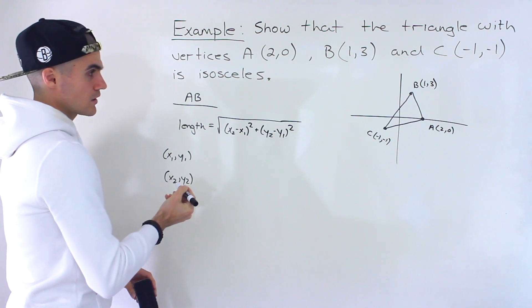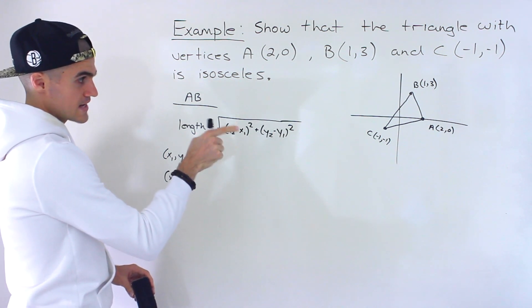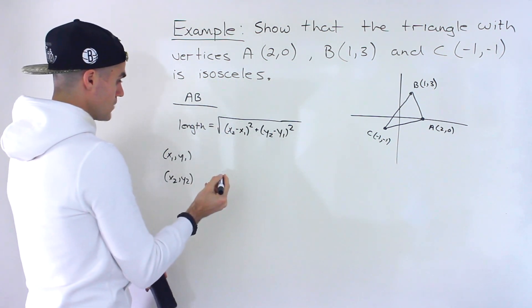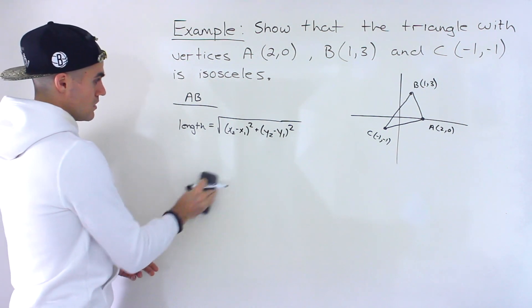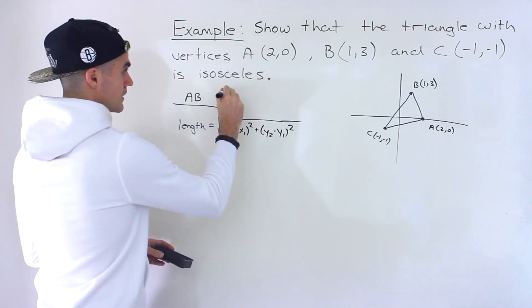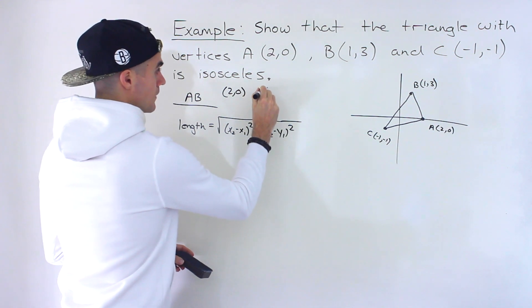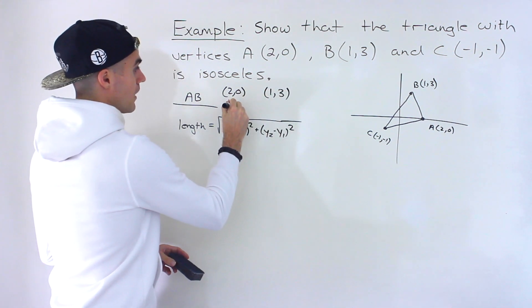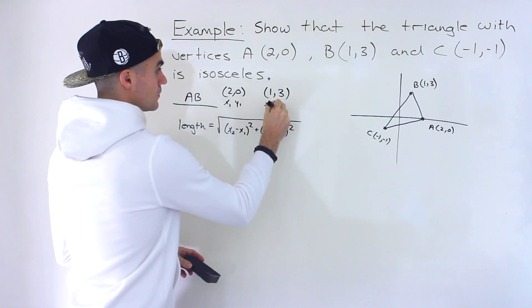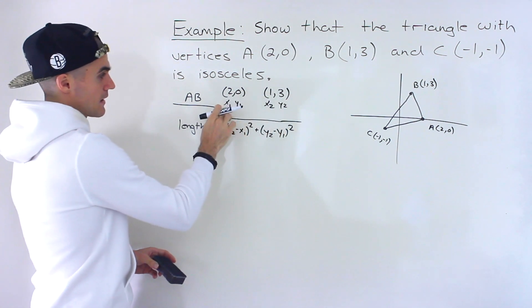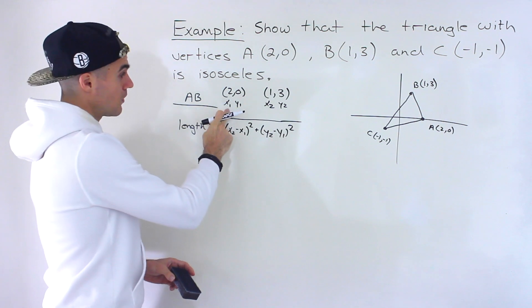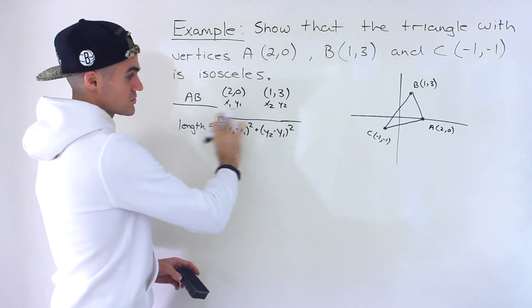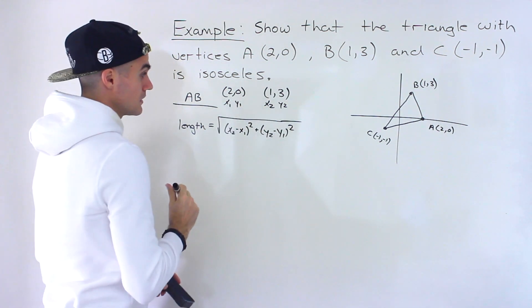So we're working with points A and B, so we got (2,0) and then we have (1,3). So I'm going to let this be x₁ y₁, x₂ y₂. The order doesn't matter. If you let this be x₂ y₂ and then this x₁ y₁, you're still going to get the same answer in the end.